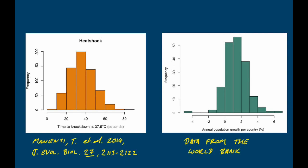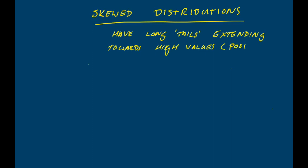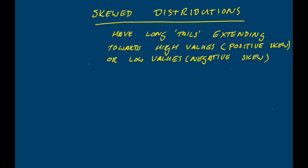Moving on, let's think about some other kinds of frequency histogram. While you might read in books that normal distributions are the most common, if you're working with biological data you're very likely to be coming across skewed distributions as well. Skewed distributions are distributions where one of those tails is longer than the other. If you have extreme values towards the high end we call that positive skew; if you have more low values than you would expect from a normal distribution, we call that negative skew.